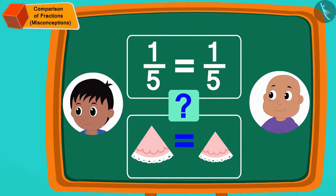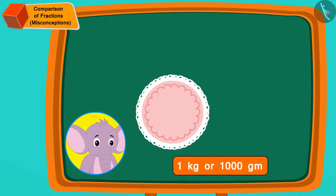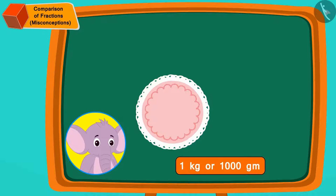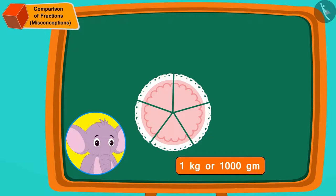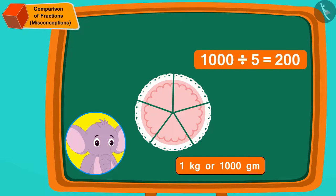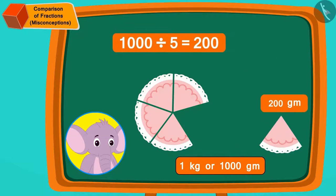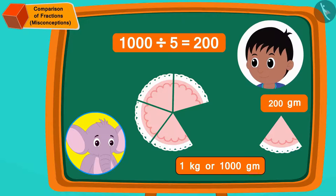Appu's cake is one kg or 1000 grams. Now if we divide it into five equal parts, then how many grams is each part? Exactly. Every part is 1000 divided by five or 200 grams. In this way, Raju got one portion of Appu's cake or 200 grams of cake.